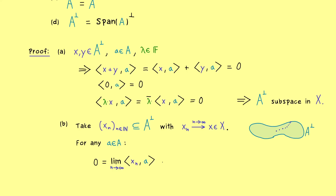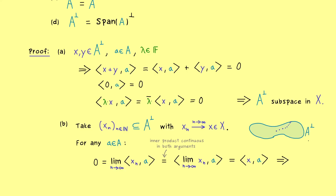The only thing we have to do is pull the limit symbol into the inner product — and we can do that because the inner product is a continuous function in both components. This fact follows because every inner product satisfies the Cauchy-Schwarz inequality. Using this, we get the inner product of x with a, which is also zero no matter which a in A we choose. Hence by definition, this limit point x also lies in A-perp, and we can conclude that the orthogonal complement is always a closed set.